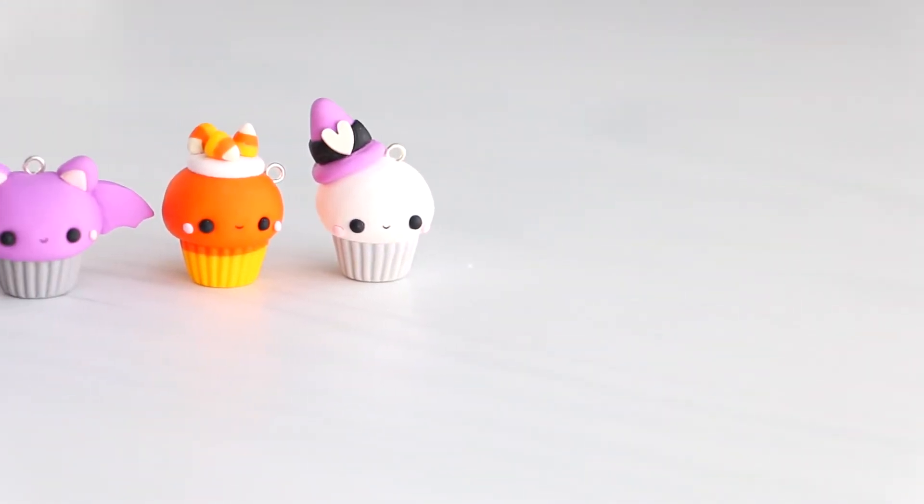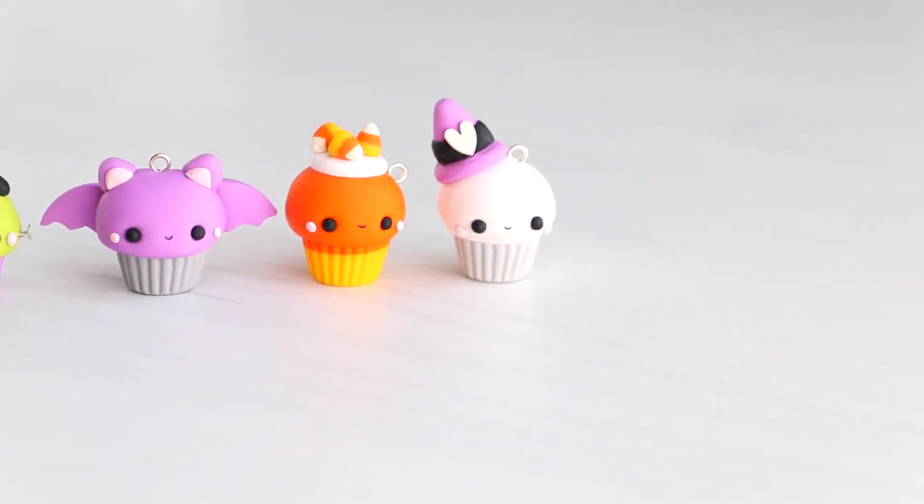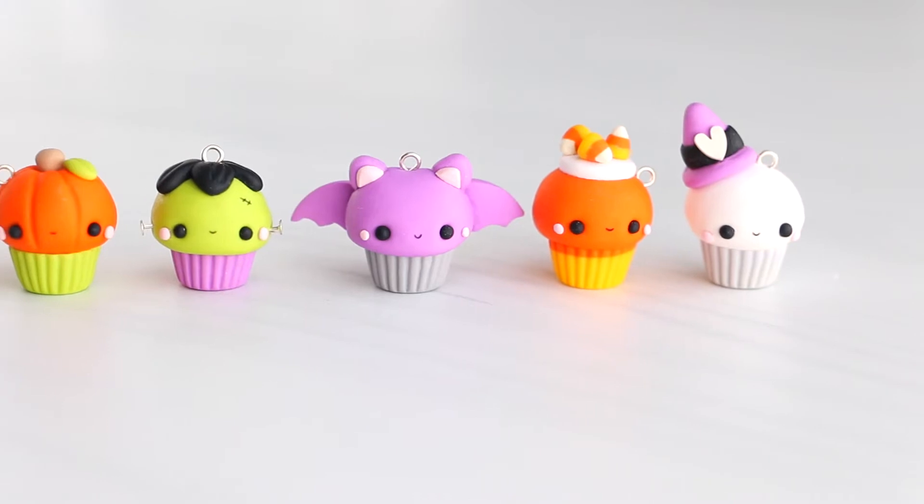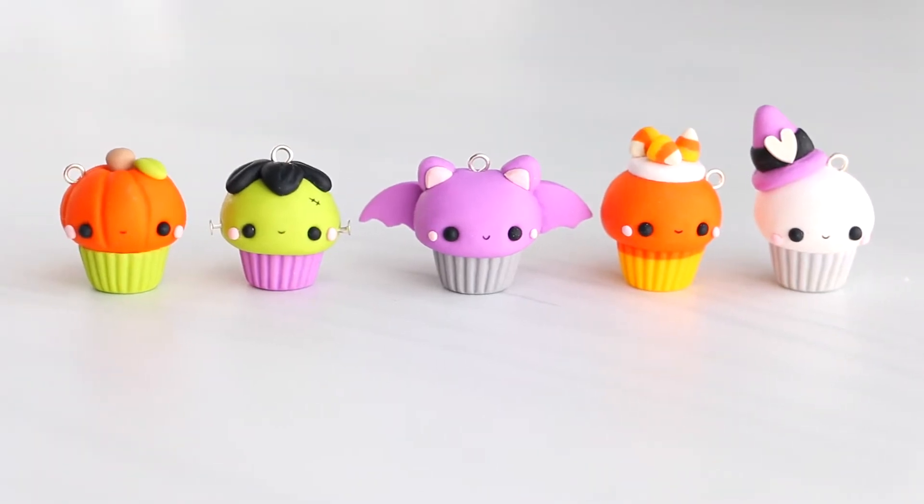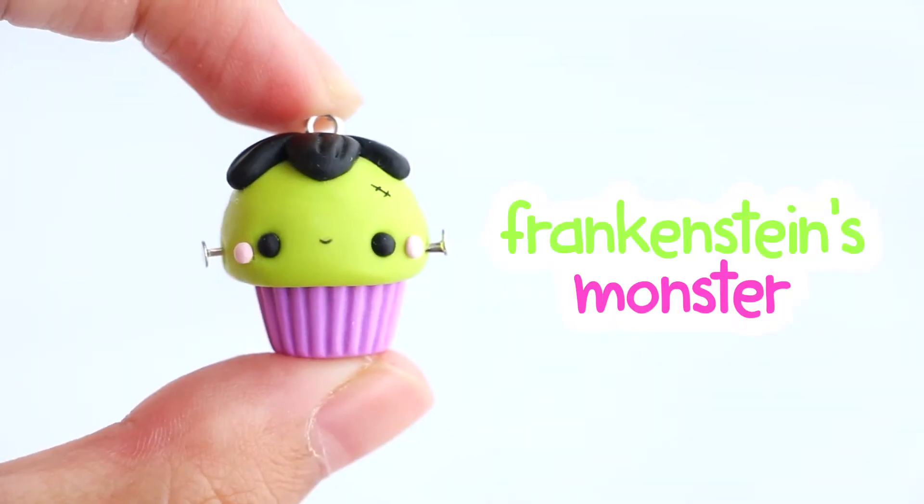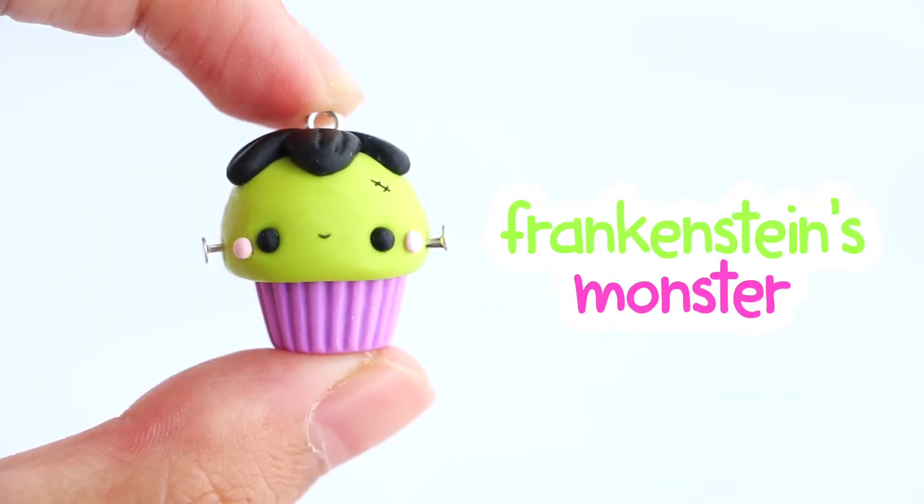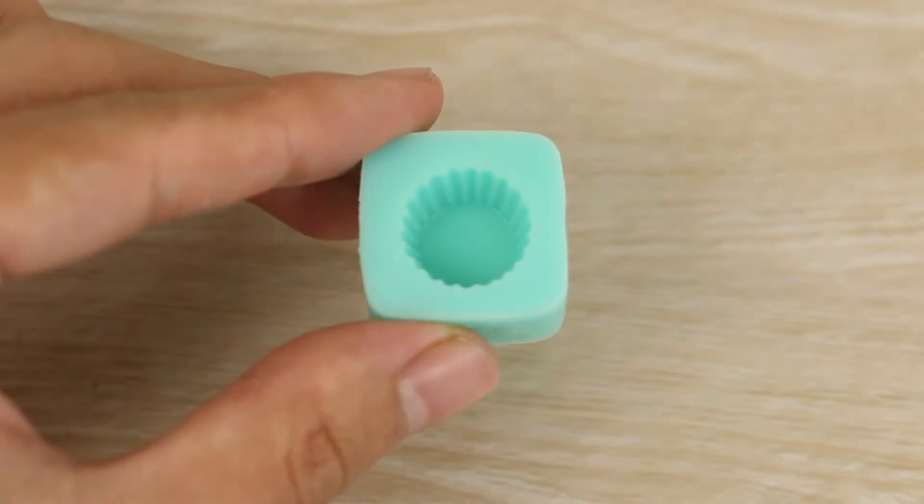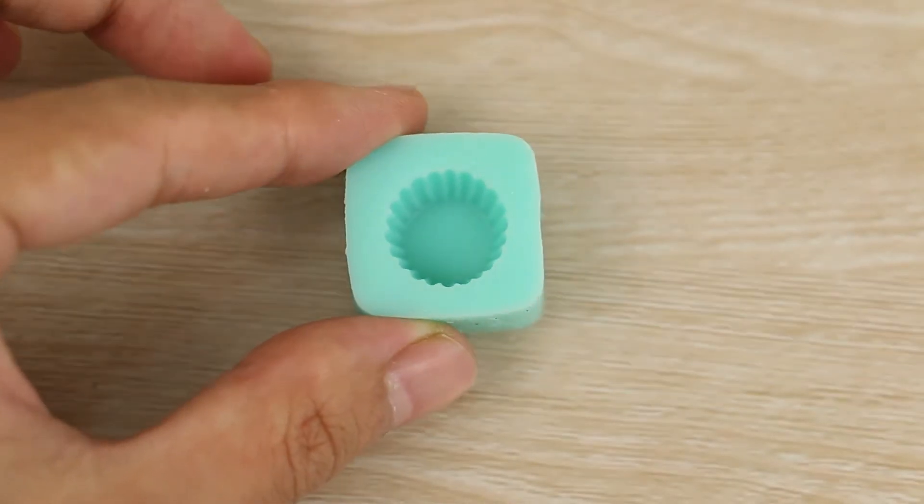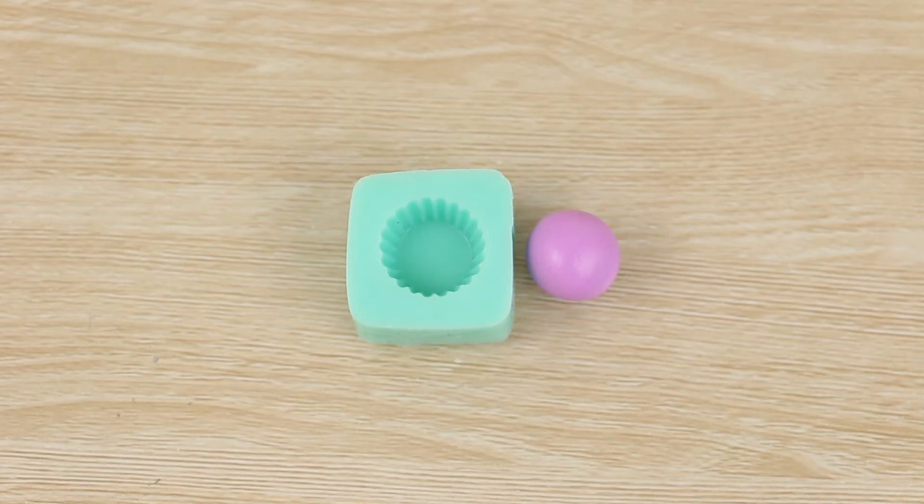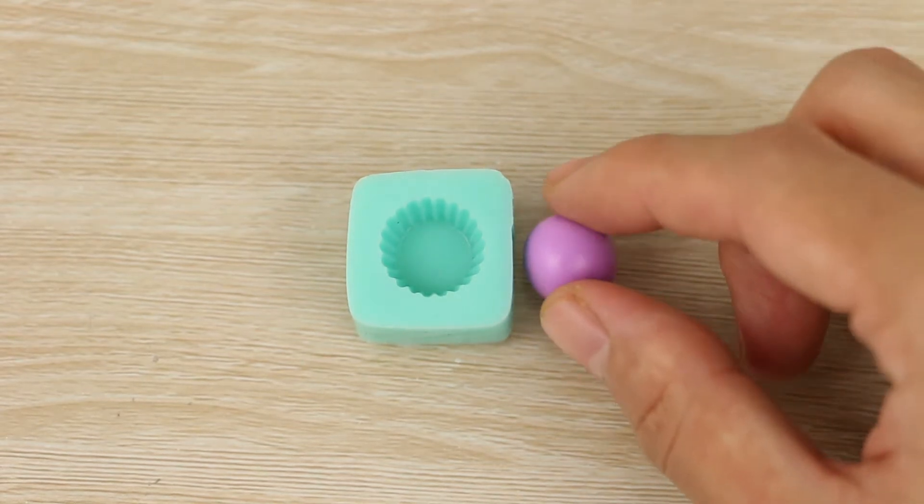Hi everyone, it's Angela from Cloudfetti and today I'm sharing how to make five different Halloween inspired cupcake charms out of polymer clay. The first cupcake I'm making is a Frankenstein's monster and to make the base for it I have a silicon mold that I got from Etsy and I'll leave a link to that in the description box below. I have some purple clay and I'm just dropping that into the mold and using my finger to squish it flat.